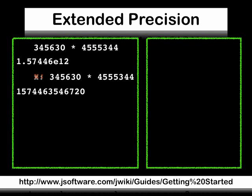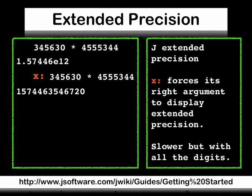Extended precision is shown by X colon, a primitive monadic verb that forces its right argument to display extended precision. It's a bit slower, but with all the digits shown.